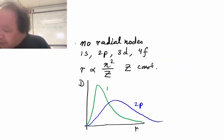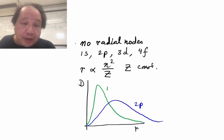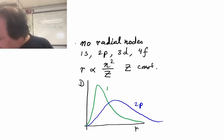And finally, we have 3d, where n is 3, n squared is 9, and that will be the furthest away still.